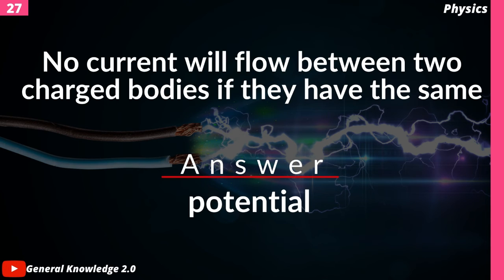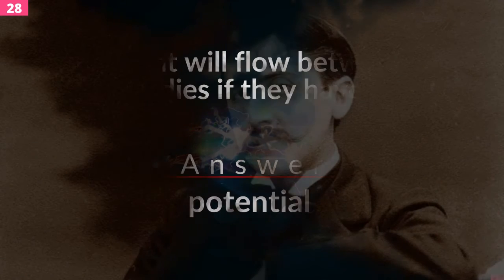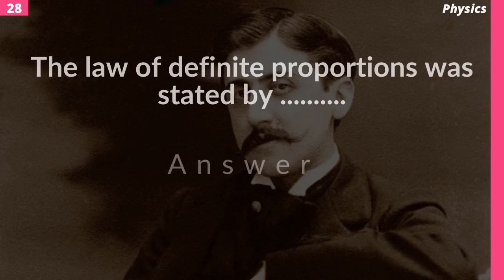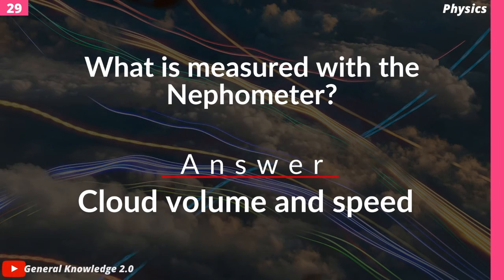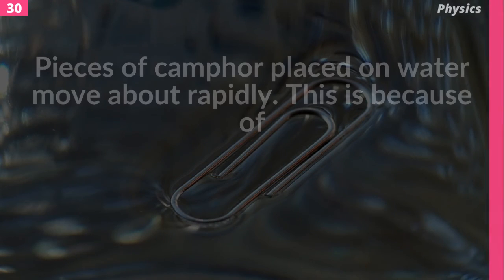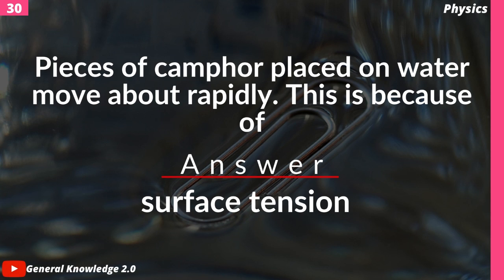No current will flow between two charged bodies if they have the same potential. The law of definite proportion was stated by — answer: Proust. What is measured with a nephometer? Answer: cloud volume and speed. Pieces of camphor placed on water move about rapidly — this is because of answer: surface tension.